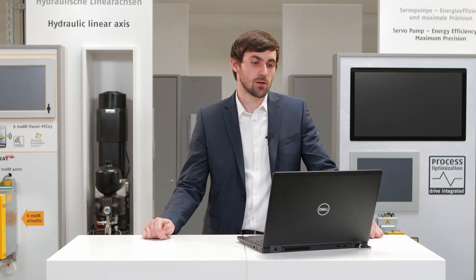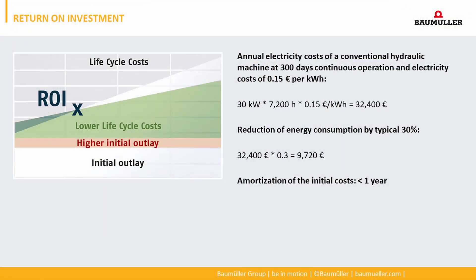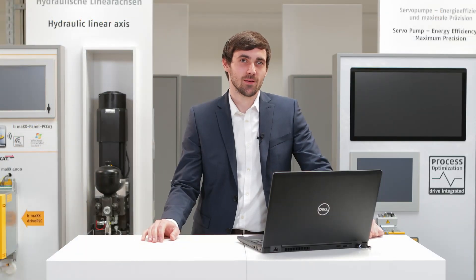This slide shows a typical return on investment calculation for a hydraulic machine. We assumed a medium power of 30 kilowatts at 300 days per year, with electricity costs of 15 cents per kilowatt hour. This results in energy costs of over 30,000 euros per year. If a typical saving of 30% is expected, this results in a reduction in energy costs of around 10,000 euros. The amortization time for the higher initial costs is typically less than one year. In general, savings up to 50% are possible.